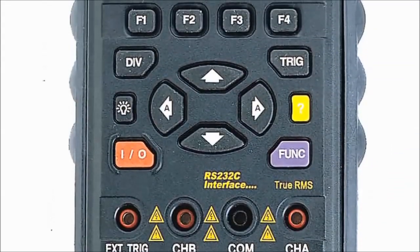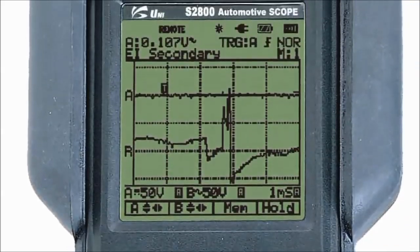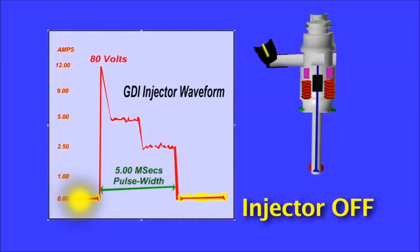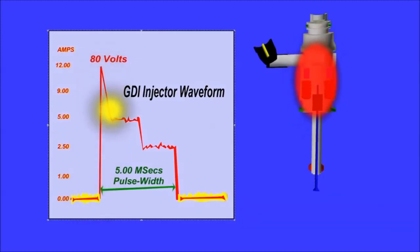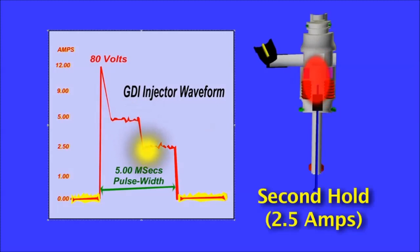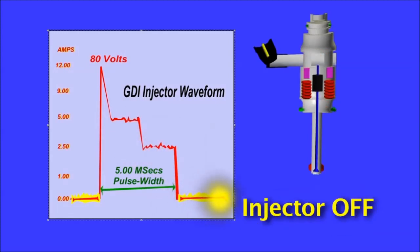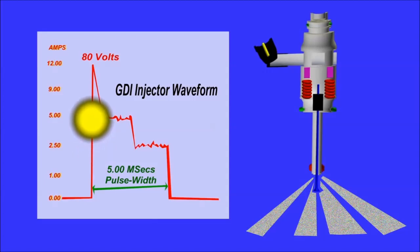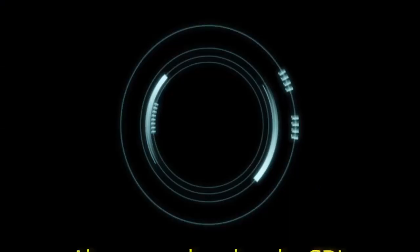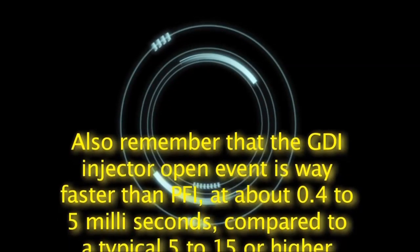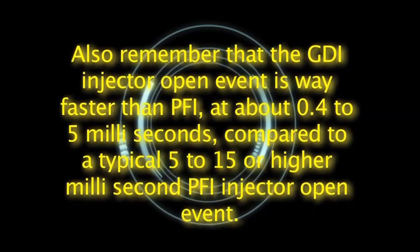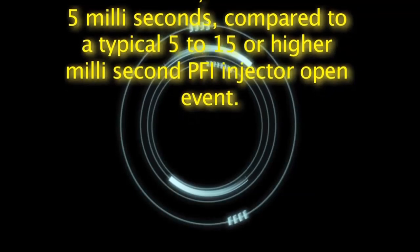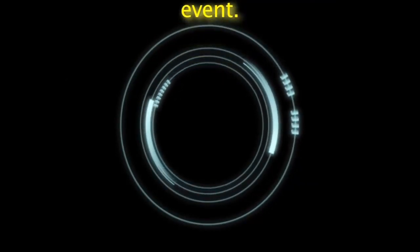The analysis of the waveform will show you how to read the waveform on the oscilloscope or graphing multimeter. A typical GDI injector current waveform shows a few points of interest. One is the injector turn-on point, signified by the sudden rise in current. This turn-on point can go as high as 12 amps on a GDI injector. The turn-on current value will change according to demand. Also remember that the GDI injector open event is way faster than PFI, at about 0.4 to 5 milliseconds, compared to a typical 5 to 15 or higher millisecond PFI injector open event.